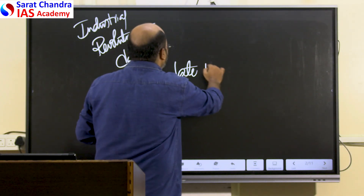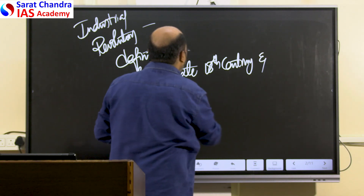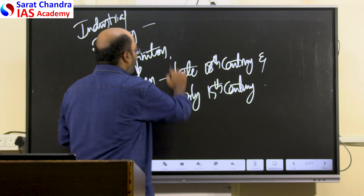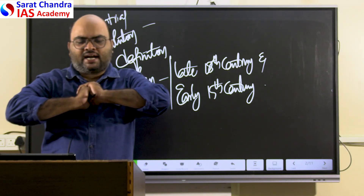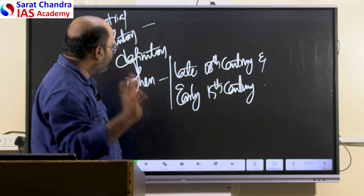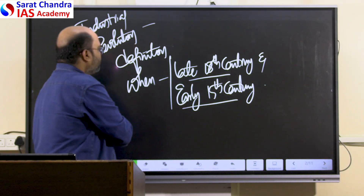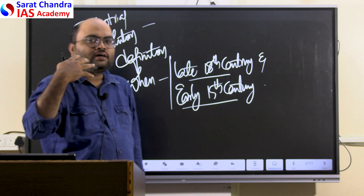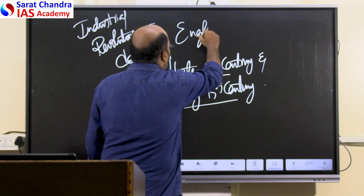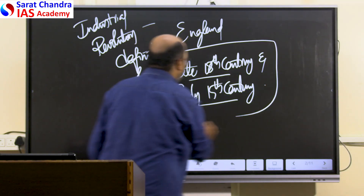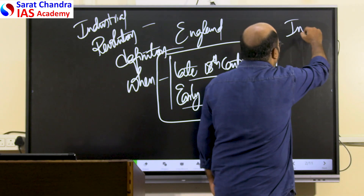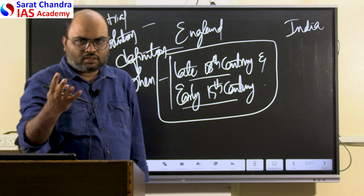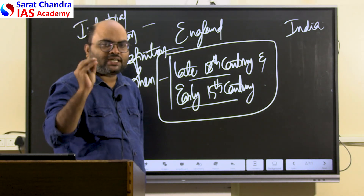In the late 18th century and early 19th century, the industrial revolution happened. Within a short span of 40 to 50 years, the method of production underwent enormous changes. Industrial revolution happened in the late 18th century and early 19th century — first in England. So we covered the basics: what is the meaning of industrial revolution, when it happened, and where it happened. Now please understand what was happening in India at the same time. In England, enormous radical transformation in the method of production was happening, and goods were being produced by using large machines in industrial towns and cities.